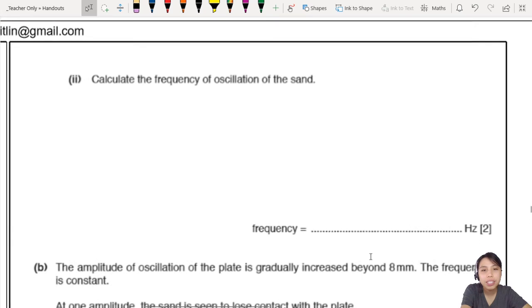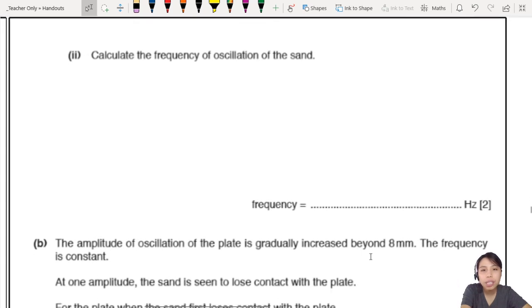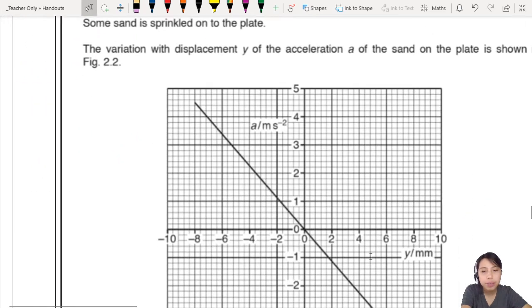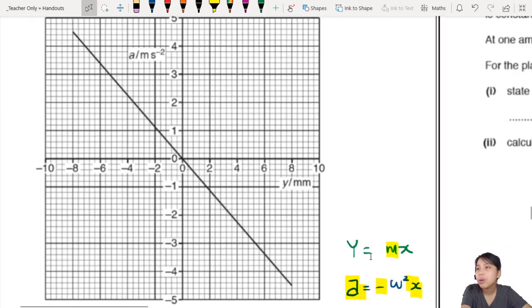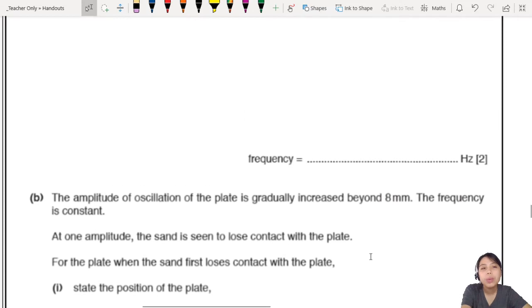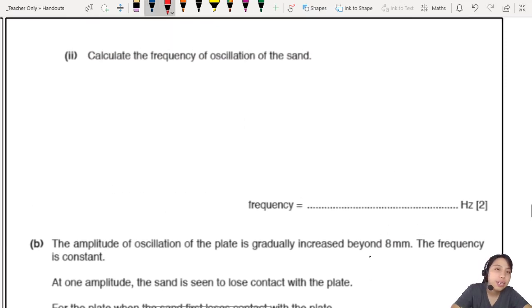Now we come into some calculations. Calculate the frequency of oscillation of the sand. So the sand is going up and down. We're going to use our graph here to help us out. Stay calm. We just read out, we start off with the equation for simple harmonic motion. The general equation, a equals negative omega square x. But since they use y as displacement, I'm just going to use y as well.